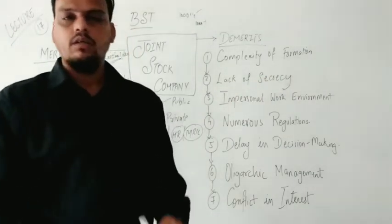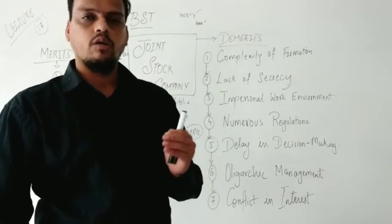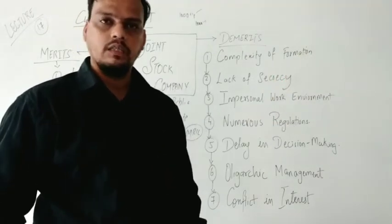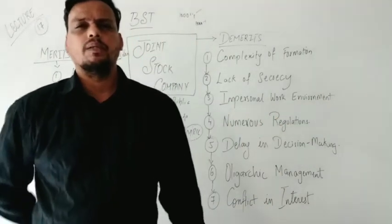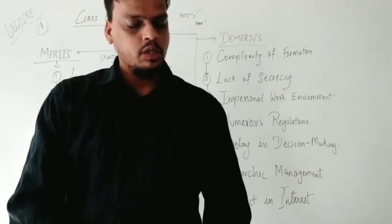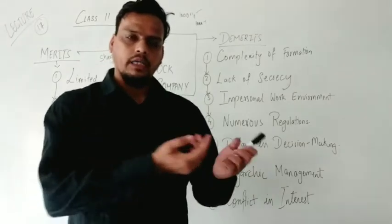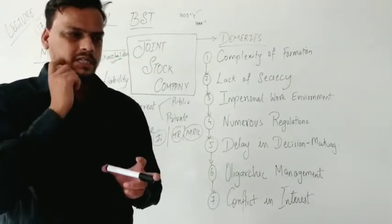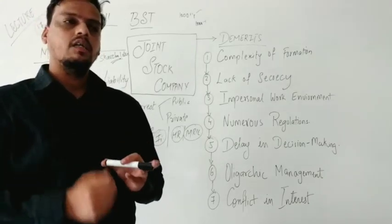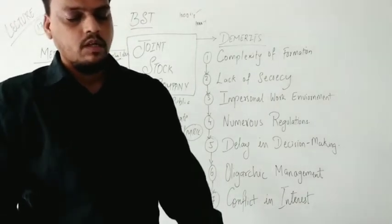The second demerit is lack of secrecy. In a joint stock company, your documents, products, and information are not secured — everything done in the organization is showcased in the market. A public company has to provide information from time to time to the office of the Registrar, and the company's information is available to the general public as well. As a result, it is difficult to maintain complete secrecy about the operations of the company.